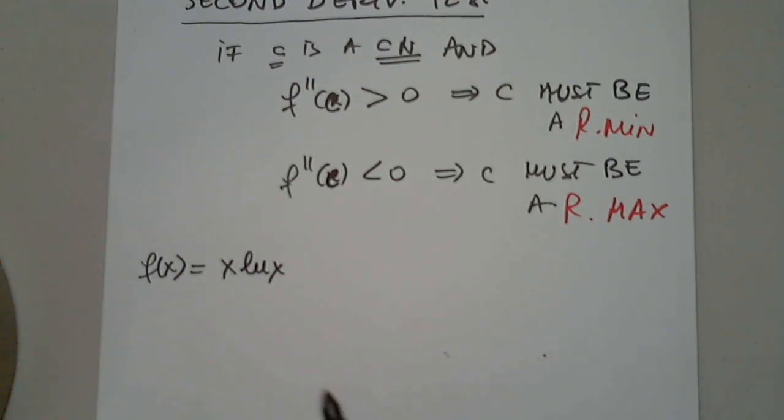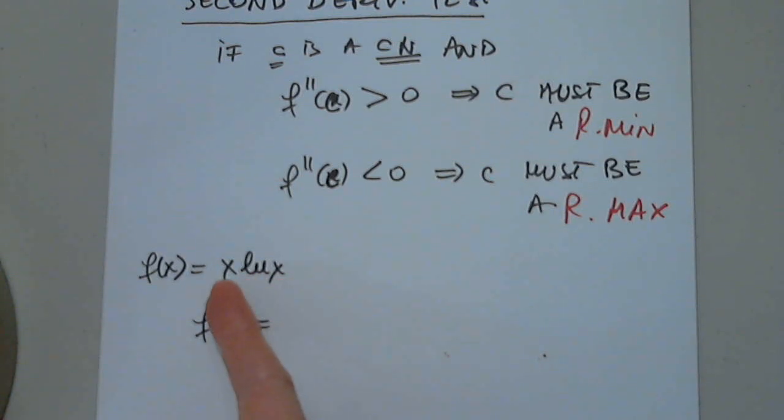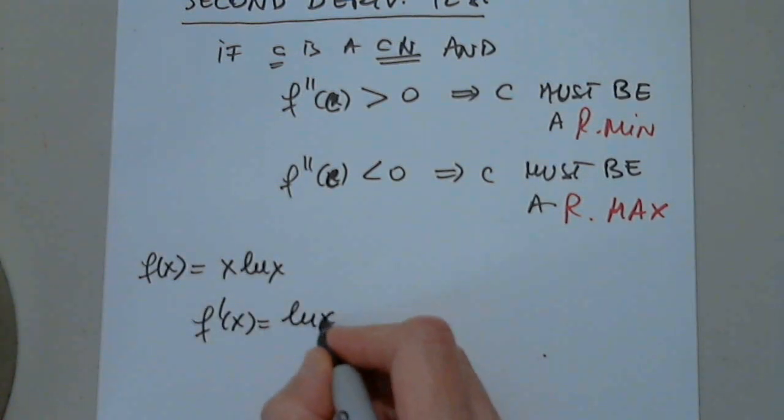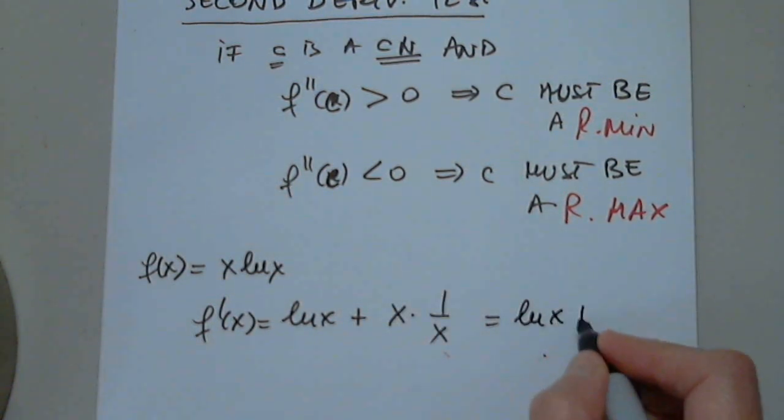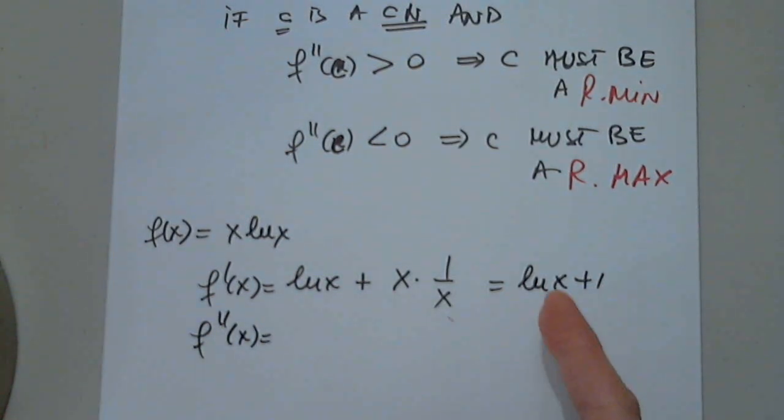Inflection points or not. So of course we have to find the first derivative. It's a product rule. First function prime is 1 times natural log x plus the first times the second function prime. When we simplify this we get 1. Then we have to find the second derivative, which is 1 over x. But this is never 0.